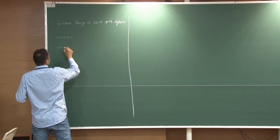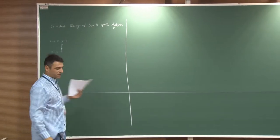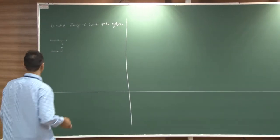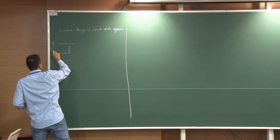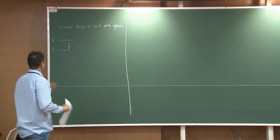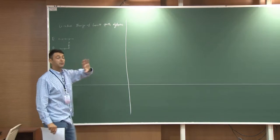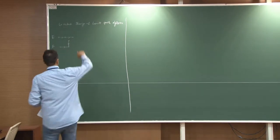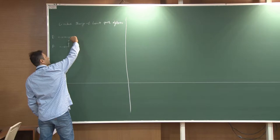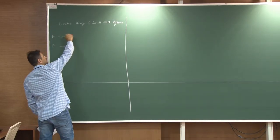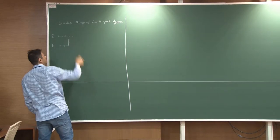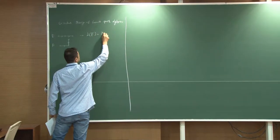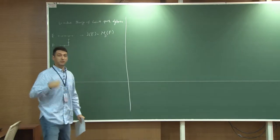If you look at two graphs — these are very simple, innocent-looking graphs — we can compute the Leavitt Path Algebra associated to these graphs. The game you play is: you look at the sink, which means there's nothing going out. You count all the paths ending at this sink. So one, two, three — there are three paths ending here. The Leavitt Path Algebra is just three-by-three matrices over the coefficient field we start with.